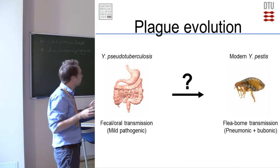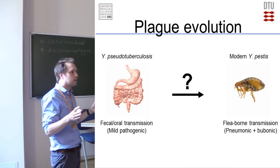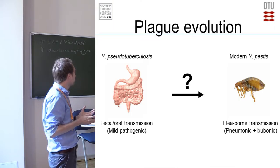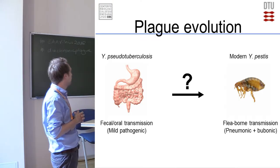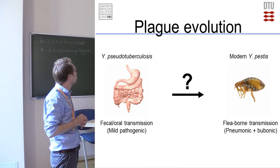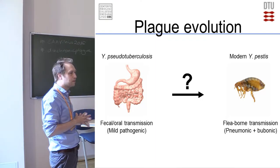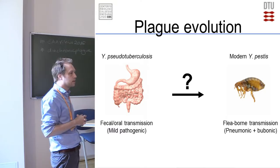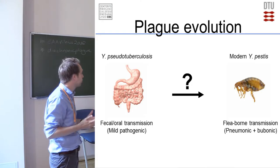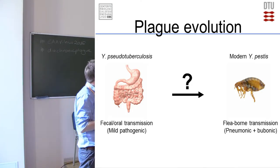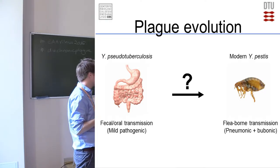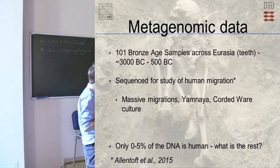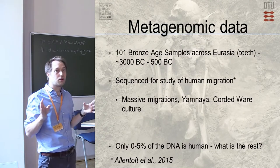One of the things I'm interested in is the evolution of human pathogens, and of course plague is a very important human pathogen, both historically and also today. So how did we go from having pseudotuberculosis, which is a mild pathogen, into maybe one of the most deadly bacteria that's ever existed for humans, being able to be transmitted by fleas and causing both pneumonic plague and bubonic plague? To try to answer that, we basically have to start somewhere completely different.